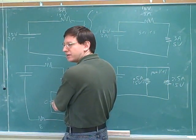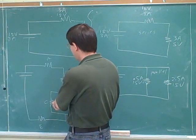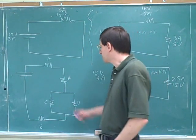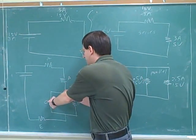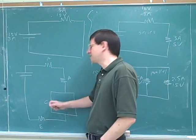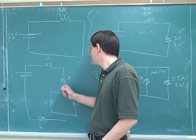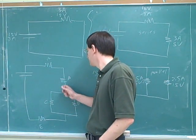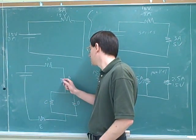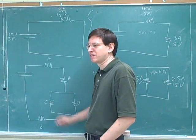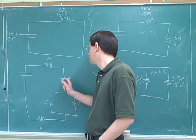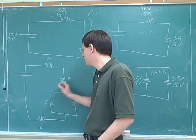Are B and C in series? No. Because something that leaves B doesn't have to go through C — it could go this way instead and bypass C. So B and C are not in series. Some people might say they're in series because if you go through B, you could end up going through C as well. But they're not in series because if you go through B, you're not forced to go through C. Series doesn't just mean you have the option of going through both; if you go through one, you're forced to go through the other.